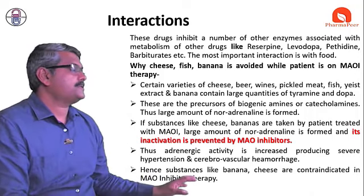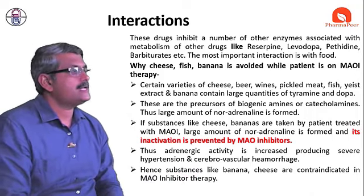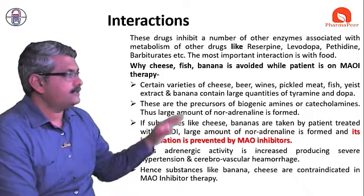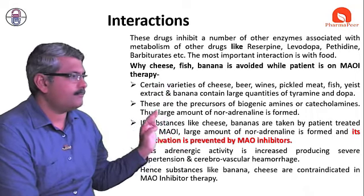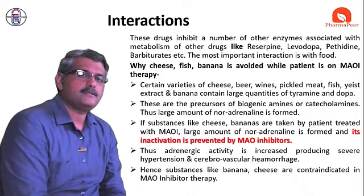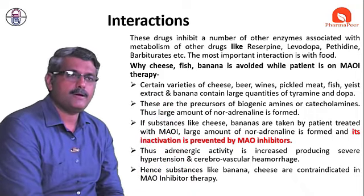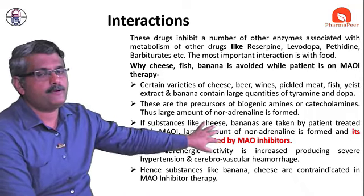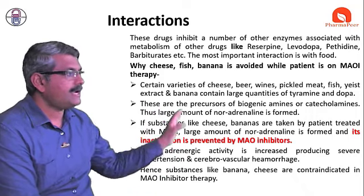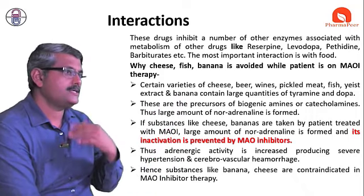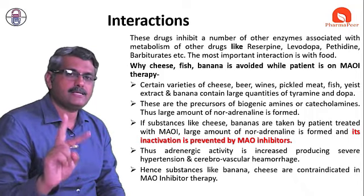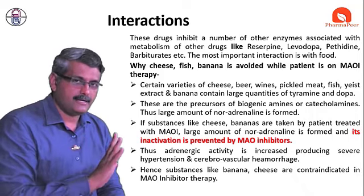Hence, substances like banana, cheese, and chocolate are contraindicated when the patient is on a MAO inhibitor. This is a very important concept for antidepressant drugs, particularly monoamine oxidase inhibitors. From an exam point of view, this is important content — it is helpful for 'give reason' questions, drug interaction questions, and contraindication questions.